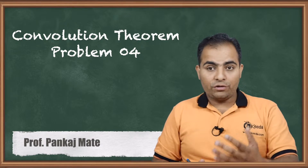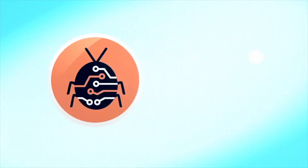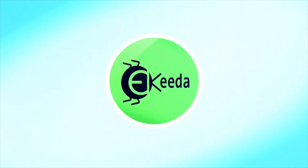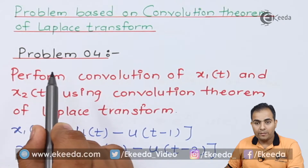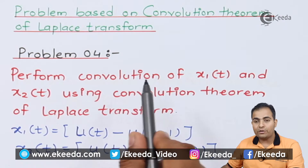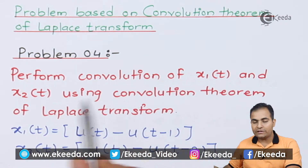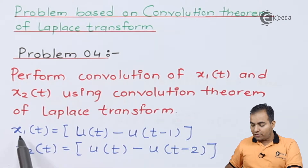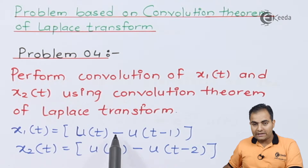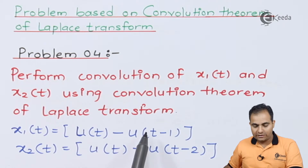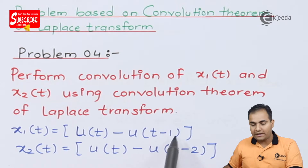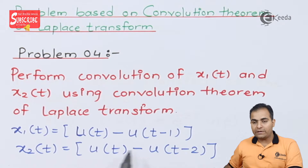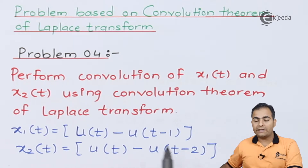Let's go through the question first. Problem number 4: Perform convolution of x1(t) and x2(t) using the convolution theorem of Laplace transform. The function x1(t) is a subtraction between two functions — u(t) and a delayed unit step shifted by 1. The second function x2(t) is also a subtraction between two unit step functions, where the second function is delayed by 2.